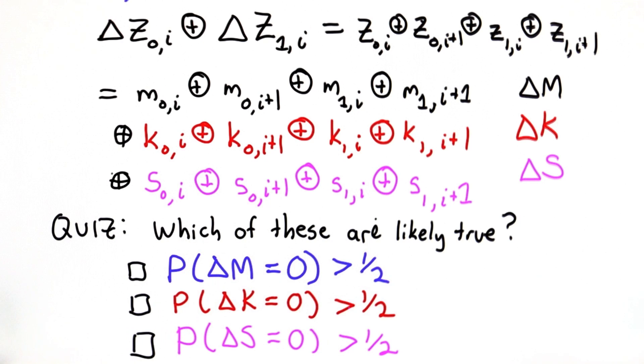If it's not uniformly distributed, then the probability could be less than or greater than 1 half. Are there any of these that we can be confident, or at least have a good likelihood that the probability of the delta for that component is equal to 0? Let me remind you what the components are.